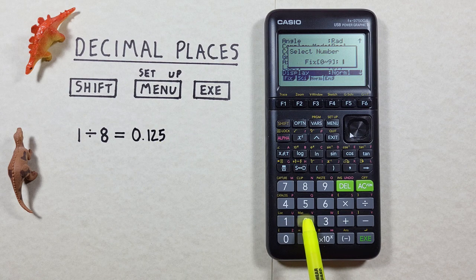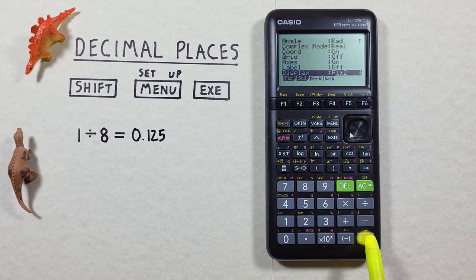So it asks us to select a number. Since we want two decimals we'll hit two here and we hit exe to confirm that and then exe again to exit the menu.